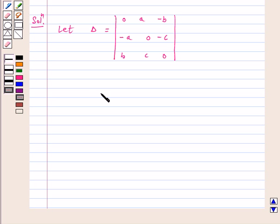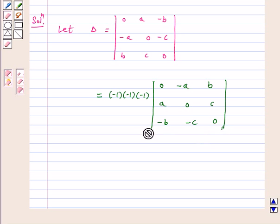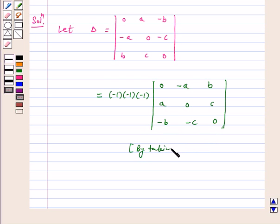This can be written as delta is equal to minus 1 into minus 1 into minus 1. Take minus 1 common from each row. So we get 0, minus A, B, A, 0, C, minus B, minus C, 0. That is, by taking minus 1 common from each row.